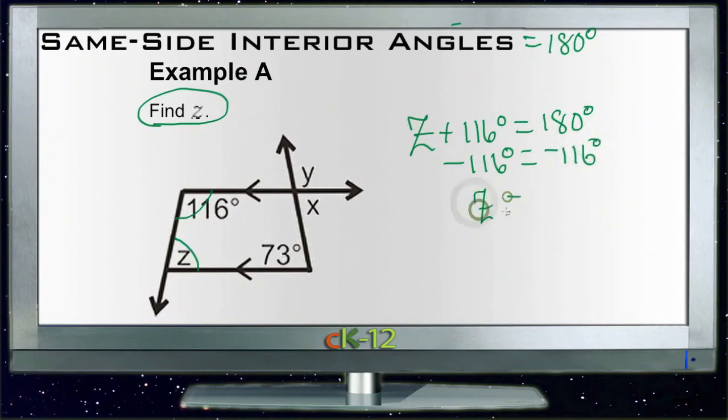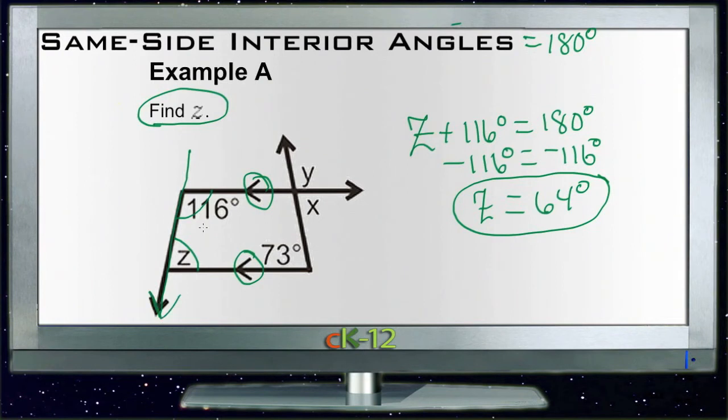So 64 degrees would be the measure of Z since these two lines have been specified parallel, and Z then represents a transversal, and Z and 116 are same-side interior angles.